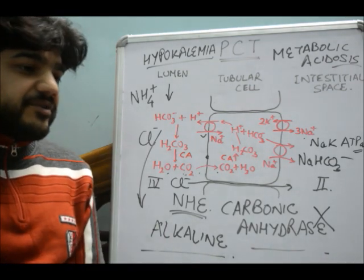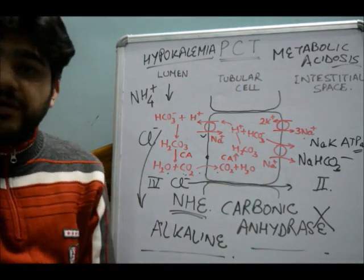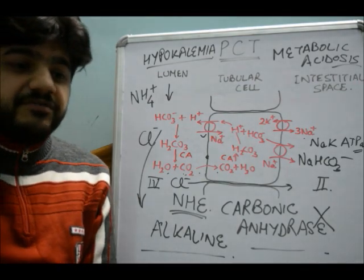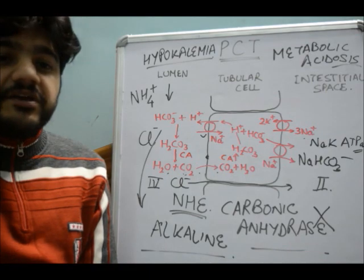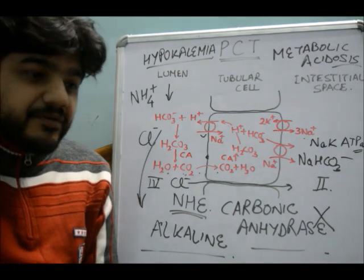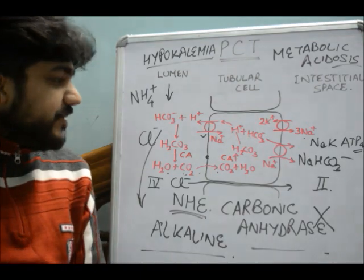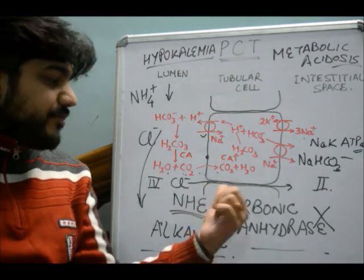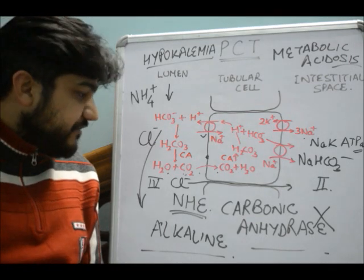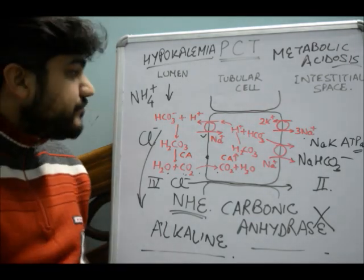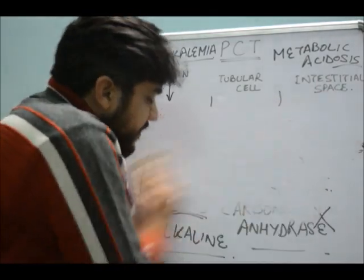Carbonic anhydrase inhibitors are weak diuretics — they are not very strong because most electrolytes are later reabsorbed. They cannot be given as monotherapy; they have to be given along with other agents. Their primary indication is not really as a diuretic. They are more importantly used at other sites where carbonic anhydrase is important. One such important indication is glaucoma, where carbonic anhydrase inhibitors are commonly given. In glaucoma, there is an imbalance between aqueous secretion and aqueous reabsorption.